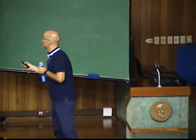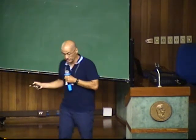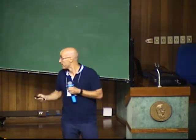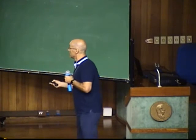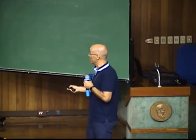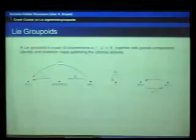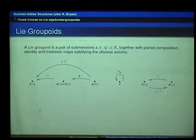In general, a Lie groupoid is just two manifolds with a pair of submersions — the source and the target. We have a partial composition: if I have two arrows, I compose them if they match, and the composition gives a product. There is an identity for each point in X with the identity property, and there is an inverse with the inverse property.